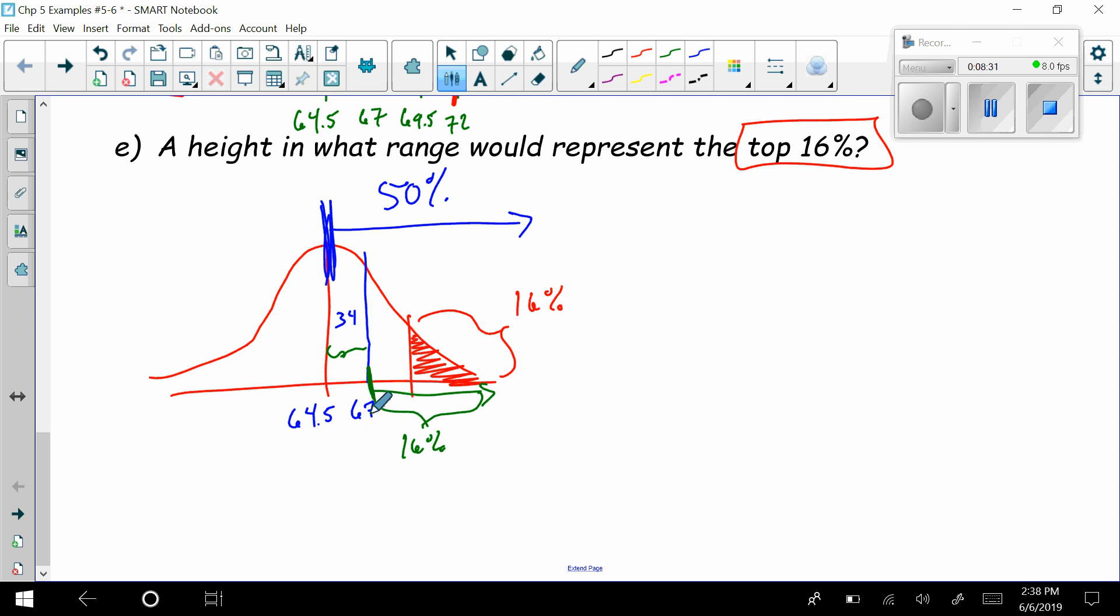Oh, that means that it would have to be at 67, such as if I redraw the curve. 64.5, 67. Here I know that this section here is 34%, which leaves 16% here, which means, oh, I've got to be at this mark, which is at 67 inches. But, you know, if I'm at 67 inches, I'm in the top 16%. But can't I be taller? So you have to put or taller. Without or taller, this is wrong.